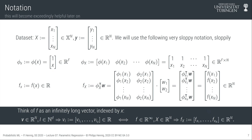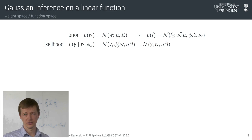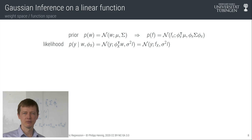This notation maps our description of f(x) onto linear algebra, which means we can now do Gaussian inference on a function given data, because the data is linearly related to the weights w which we don't know. To do so, we just write down a prior and a likelihood and use Bayes' theorem. Because everything's Gaussian, the posterior is computable using linear algebra.